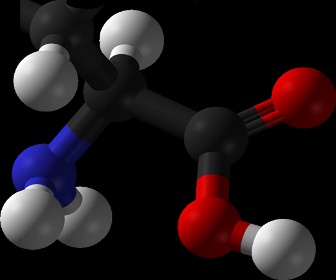Glucose-alanine cycle: In mammals, alanine plays a key role in the glucose-alanine cycle between tissues and liver. In muscle and other tissues that degrade amino acids for fuel, amino groups are collected in the form of glutamate by transamination.